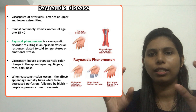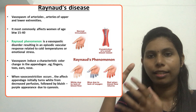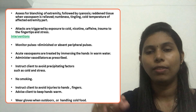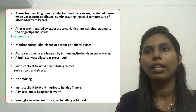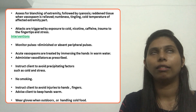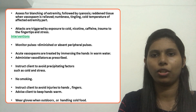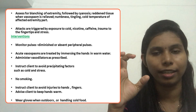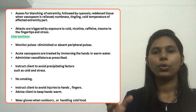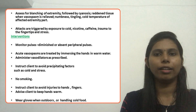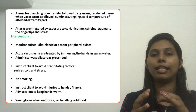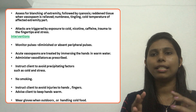Those are the basic things about Raynaud's phenomenon — what areas it affects and what are the main causative factors. We should assess for blanching of the extremity, and there is a chance of numbness and tingling. The main attacks are triggered by exposure to cold, nicotine, caffeine, trauma to the fingertips, and stress.